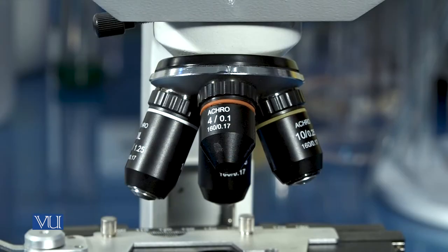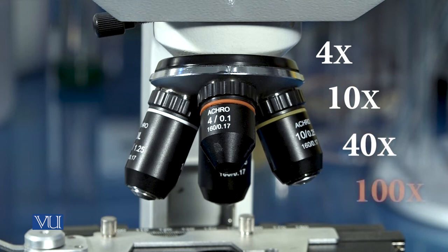A compound microscope usually has four objective lenses which are of magnification 4x, 10x, 40x and 100x.